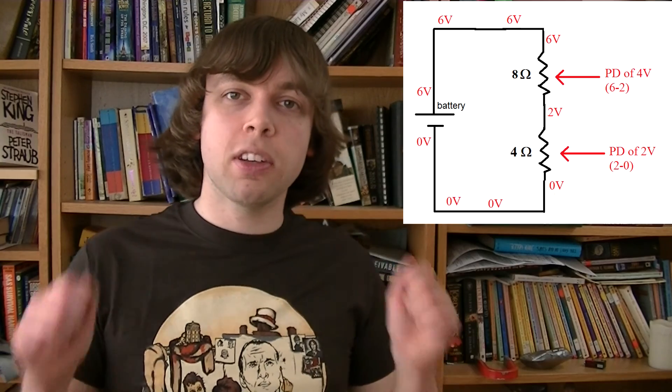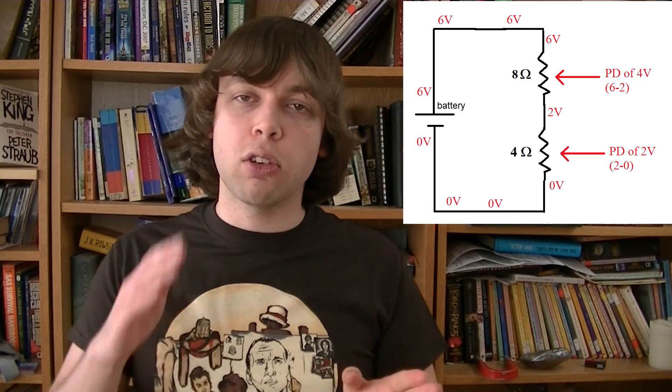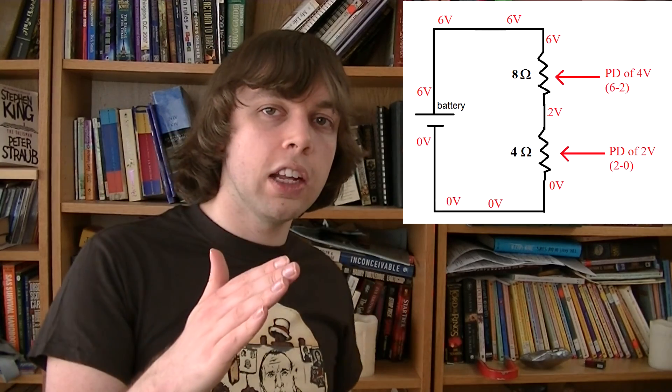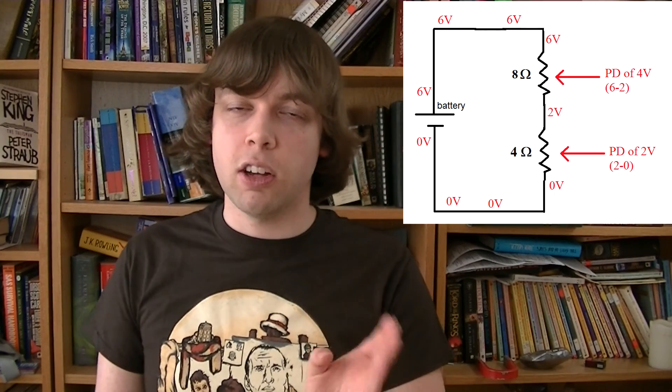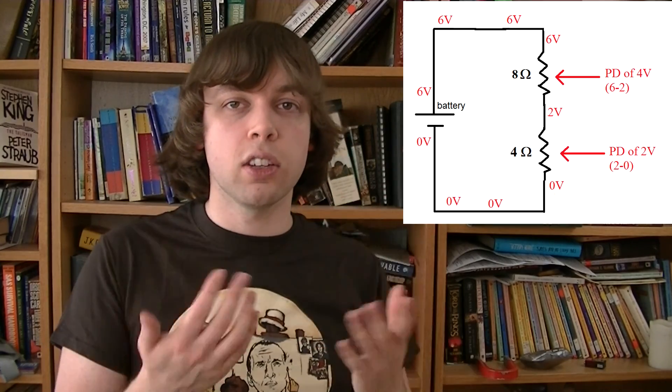Another way to think about this is if I measure the potential difference over the battery, the difference between one side of the battery and the other has to match the voltage of the battery. So if it's a six volt battery, one side has six volts, the other side of the battery has zero volts. That's why it's a six volt battery.